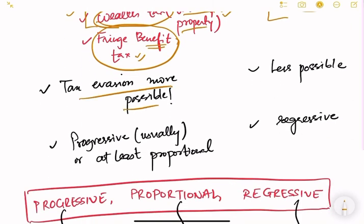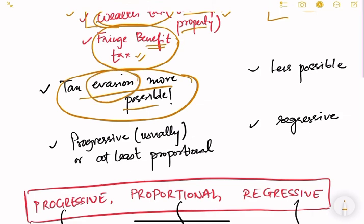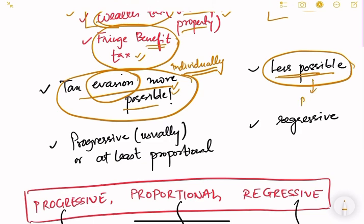Tax evasion - meaning not paying taxes you are supposed to pay - is more possible in direct taxes because individuals file their own tax returns and taxes have to be collected individually, making it easier for people to evade. In indirect taxes, evasion is less possible because taxes are collected directly from producers, who maintain detailed accounting systems and records.